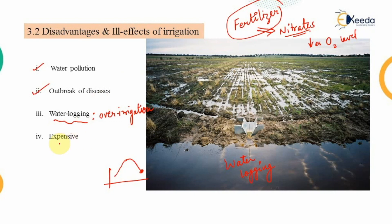The last disadvantage of the irrigation system is that the entire system is very expensive in nature. Investing in something this expensive for public benefit may reduce government revenue. Therefore, careful studies must be carried out whenever we are planning an irrigation system for public benefit.